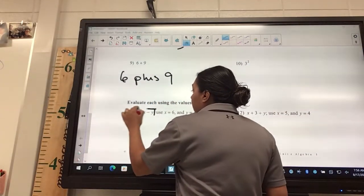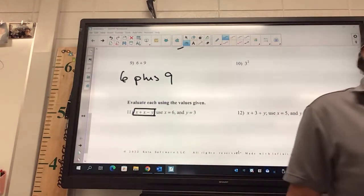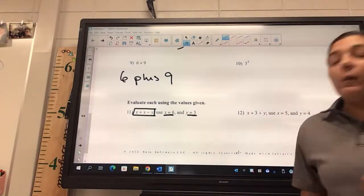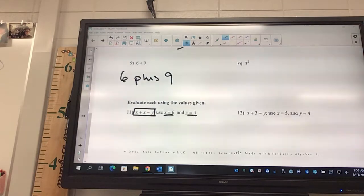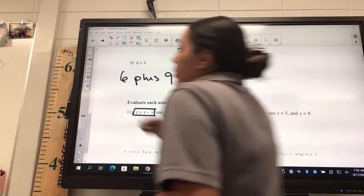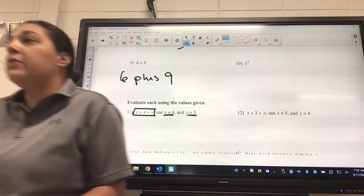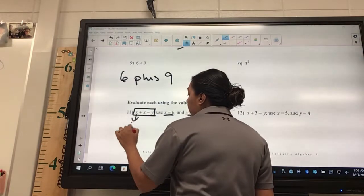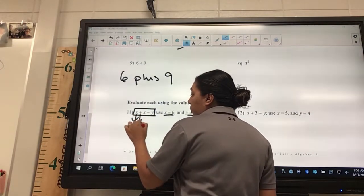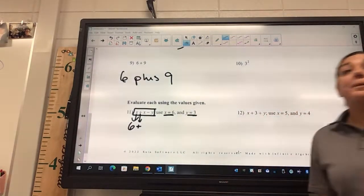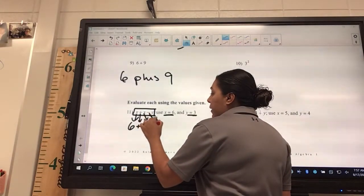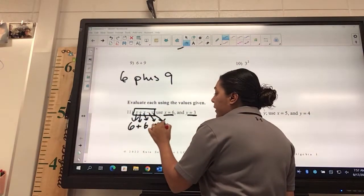So, we're taking, they tell you what the letters are, and essentially need to plug it in. So, right here, this part is the equation, I would say, or the expression, okay? And then they tell you that x equals six, and y equals three. So, everywhere there's an x, you should be putting what? Six. And everywhere there's a y, you should be putting in three. Three. And so, after that, you're just going to be using your order of operations.